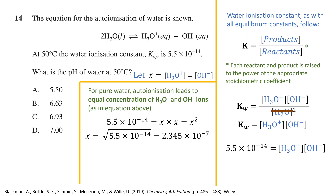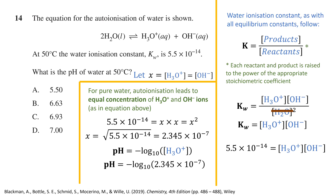Solving gives x equal to 2.345 × 10⁻⁷. Using the formula at the back of the exam, pH equals the negative log base 10 of the hydronium ion concentration. Therefore, pH equals −log₁₀(2.345 × 10⁻⁷), which gives a pH of 6.63. The answer is option B.